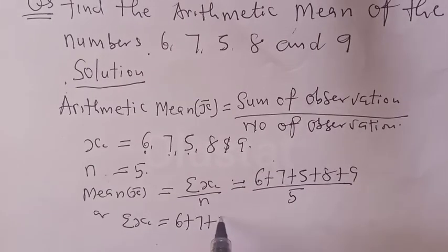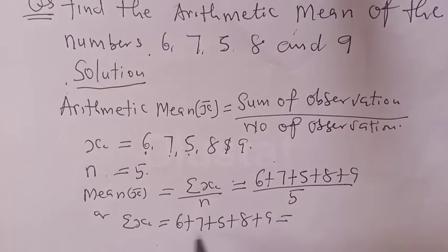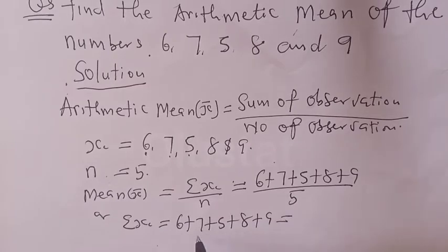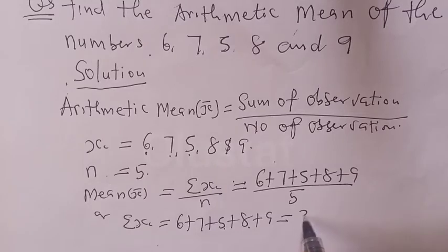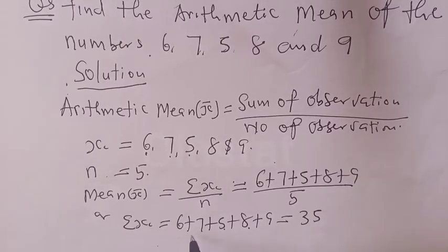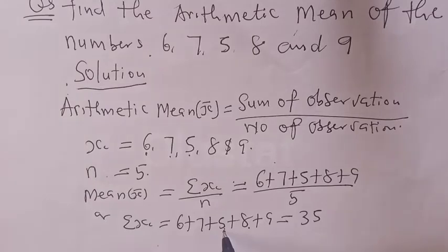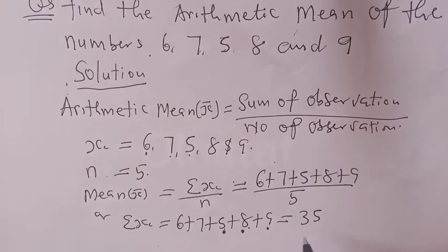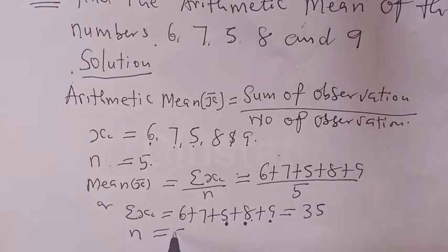The summation of xi is: 6 plus 7 plus 5 plus 8 plus 9. Computing step by step: 6 plus 7 is 13, plus 5 is 18, plus 8 is 26, then plus 9 gives us 35. So the sum is 35, and our n is equal to 5.